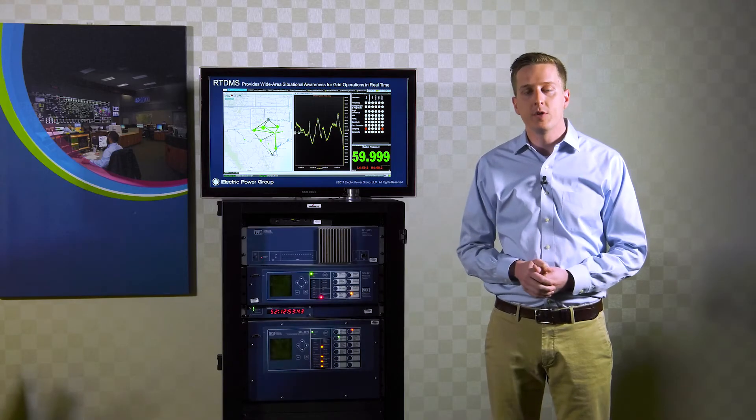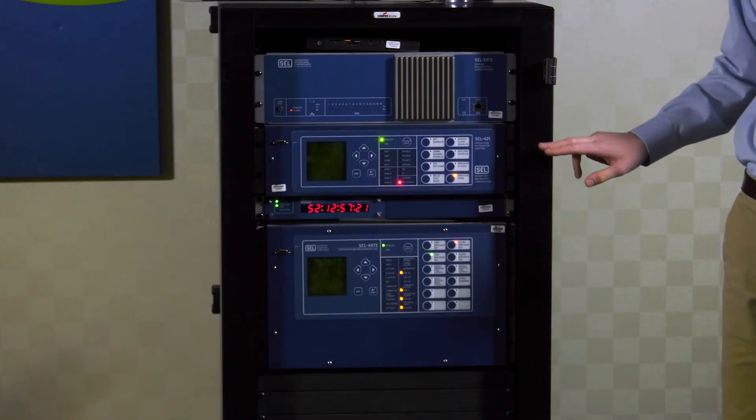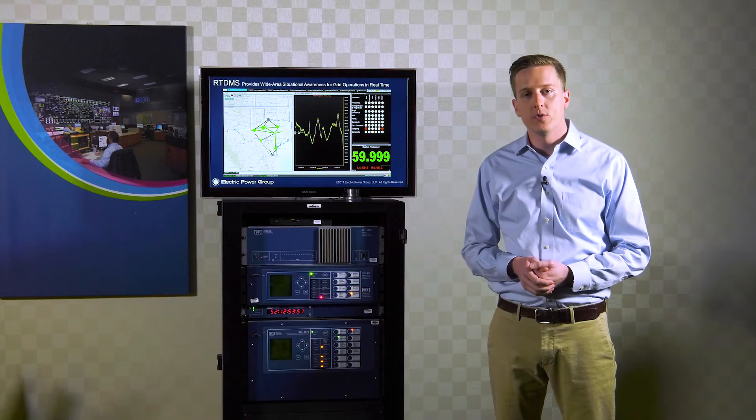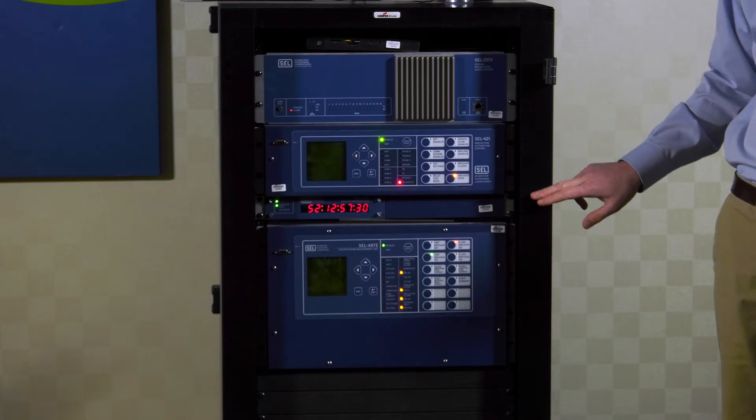Now let's take a look at a synchrophaser device here at PJM. Here we have two standard substation relays that receive signals from voltage and current transformers in the substation. We also have a high accuracy GPS clock that provides a time reference for measuring phase angle and to provide a time stamp on the measurement data.